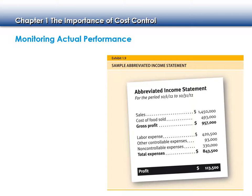This brings up the 80-10-10 rule. Ten percent of people will do the right thing no matter what. Ten percent will do the wrong thing no matter what. Eighty percent of people will do the right thing if they know there's a potential of being caught. So if you are actually monitoring your performance and staying on top of it as a manager, and people know that you check how many steaks were sold that day, that 80% will follow the rules.